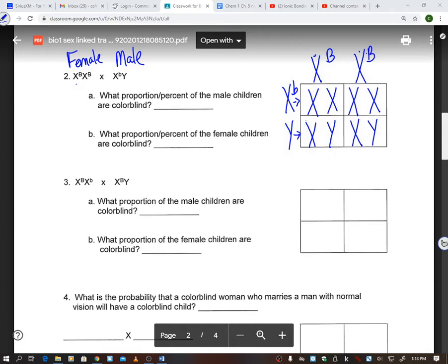So now that we have that, I'm going to bring these B's down. I've got a capital B, lowercase, capital, lowercase, capital, the Y has nothing on it, and capital, the Y has nothing on it. So what proportion or percent of the male children are colorblind? So I'm looking at just the male children, just these two right here. And there's 0% chance that you will have a colorblind male. What proportion or percent of the female children are colorblind? I'm going to look at just my females, which are right here, and that is also 0%.